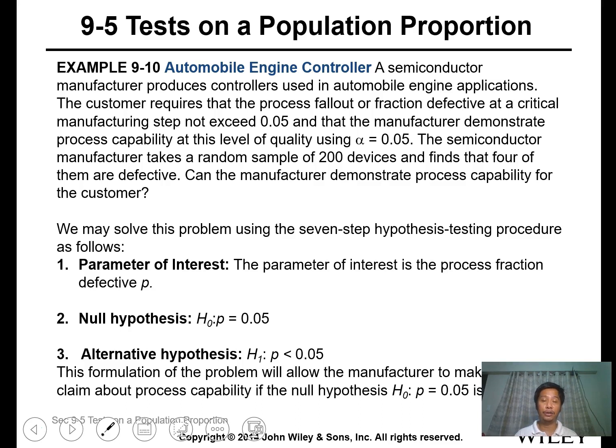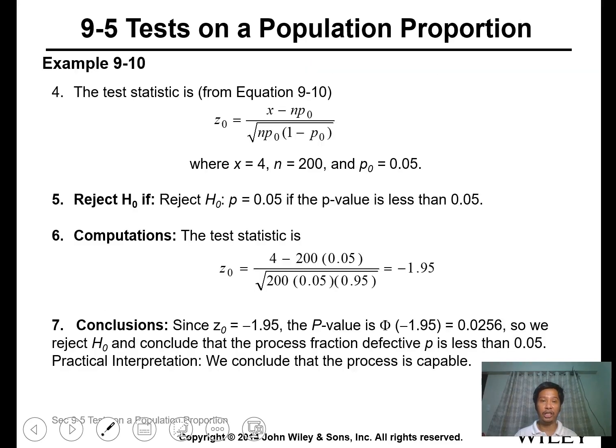We'll have the seven-step hypothesis procedure. Parameter of interest: the proportion of defectives. Null hypothesis is P equals 0.05. Alternative hypothesis is P less than 0.05. This formulation allows the manufacturer to make a strong claim about process capability if the null hypothesis is rejected. The statistical test is the z-test using the proportion formula. We obtain x equals 4, n equals 200, and P0 equals 0.05.